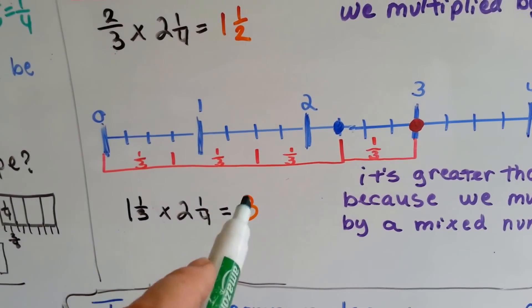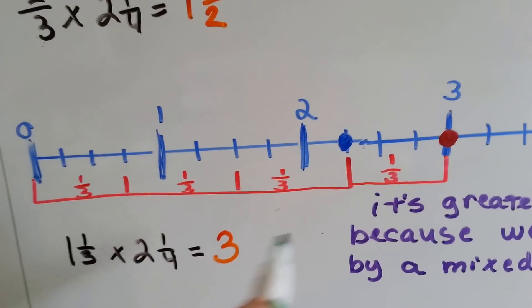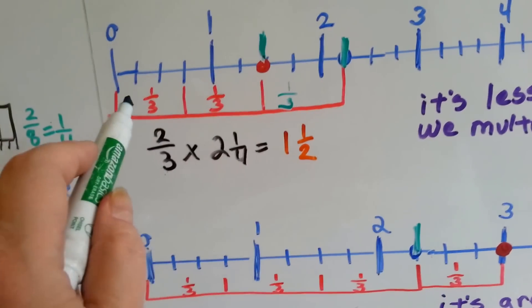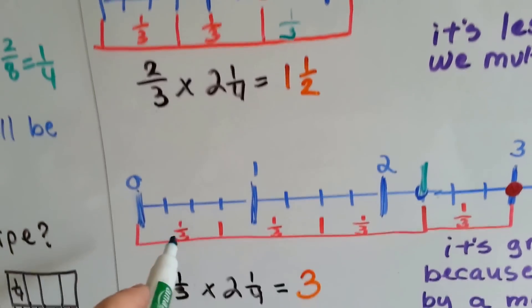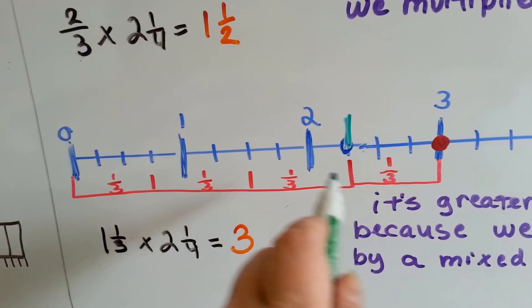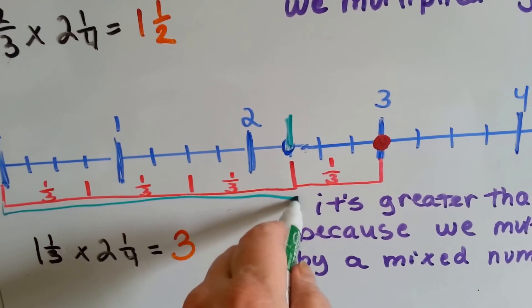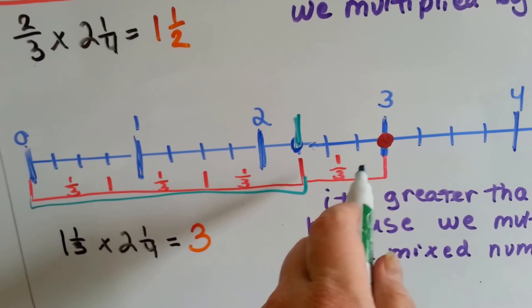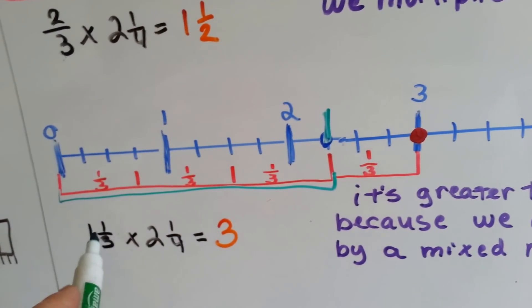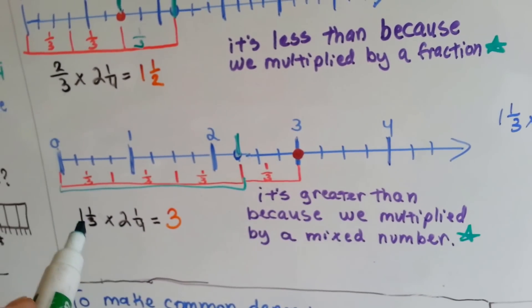Now we're going to multiply by 1 and 1 third. It's going to be bigger than 2 and 1 fourth because this is bigger than 1. Here's our 2 and 1 fourth. When we split it into thirds — counting 1, 2, 3 lines for each third — we get three thirds, which equals 1 whole with 1 third left over. So that's the 1 and 1 thirds. Where does it put us on the number line? It puts us on 3. So 1 and 1 third times 2 and 1 fourth is 3, and it's greater than 2 and 1 fourth because we multiplied by a mixed number bigger than 1.